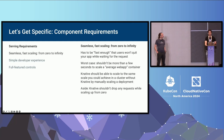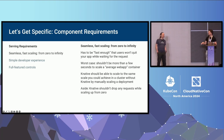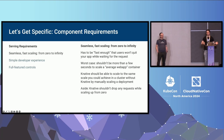Diving into the scaling requirements: scaling had to be fast enough that users won't quit your app while waiting for the request. If scaling takes 10 seconds, most users would just leave. So it had to be on the timescale of a few seconds in the worst case for your average web app. Another key requirement is it should be able to get to a huge scale — whatever scale you could achieve in that Kubernetes cluster without Knative. And for all of the scaling, Knative shouldn't drop any requests. Job zero is to be invisible.